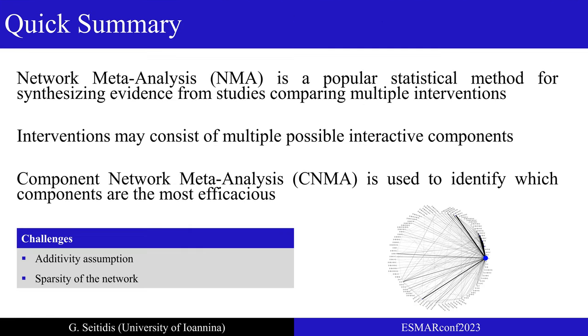Network meta-analysis is an established statistical method for synthesizing evidence from studies that compare multiple interventions. Networks usually include interventions that consist of multiple and possible interactive components, such as the characteristics of the intervention, the mode of delivery if it is delivered face to face or remotely, individually or in groups, the type of provider, the location, etc. These interventions are referred in the literature as multi-component or complex.